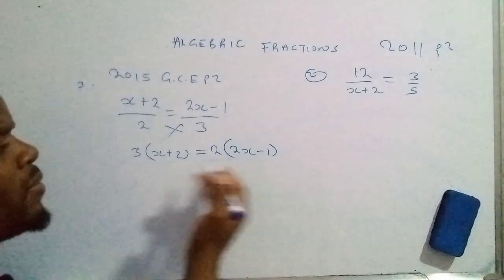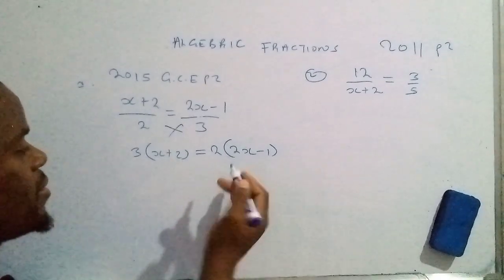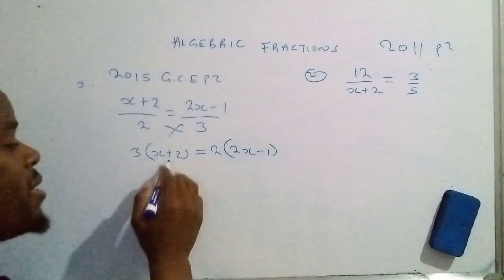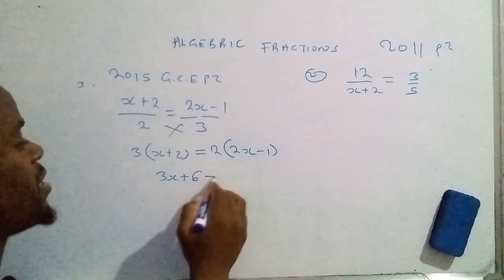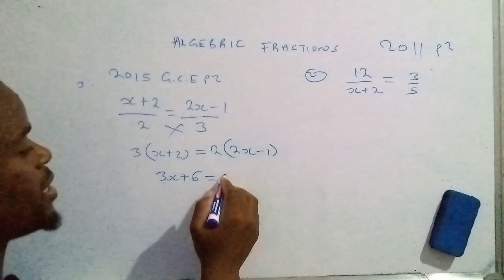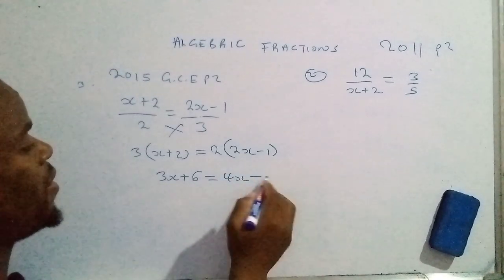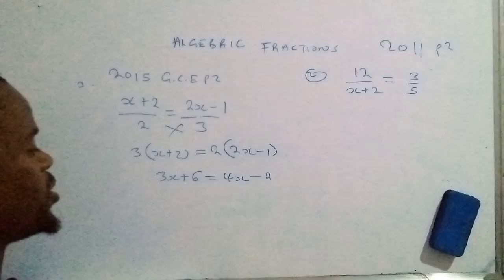You multiply this 3 by x, that would be 3x, plus 3 times 2, that's a 6. And 2 times 2x, that's 4x, minus 2 times 1, that's a 2.